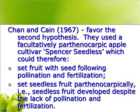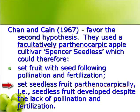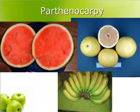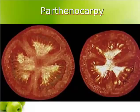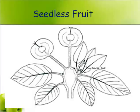Chan and Cain, in a classic research paper, indicated the importance of plant growth regulators. They used a facultative parthenocarpic apple cultivar called Spencer seedless, which could set fruit with seed following pollination and fertilization, or could set seedless fruit parthenocarpically. Parthenocarpically means seedless fruit developed despite the lack of pollination and fertilization. After developing two populations of fruit — both seeded and seedless — they studied the relationship between seed number on the fruiting spur and the return bloom on those same spurs the subsequent year.